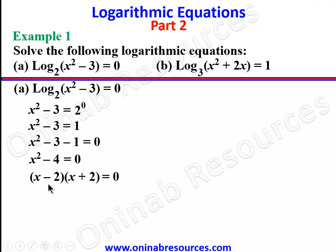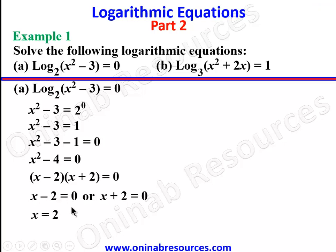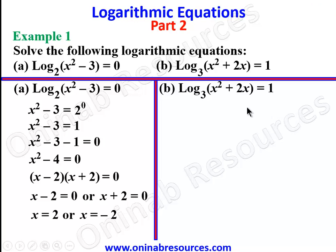In a quadratic equation like this, after factorizing and setting it equal to zero, it is either x − 2 = 0 or x + 2 = 0, or both equal zero. Solving this, we have x = 2 or x = −2. Since x is squared, whether positive or negative it will give the correct value. That is the end of the solution to Example 1a.